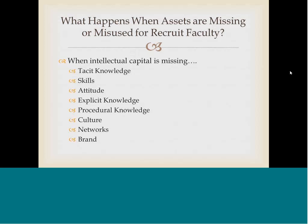It would seem to me — and this is just my personal opinion — that the highest valued asset would be tacit knowledge when we're looking at faculty. So if we were to misuse or mismanage some of the other aspects of the faculty member's intellectual capital, we might lose access to their tacit knowledge. Or the faculty member might become discouraged, be less productive, or be less willing to share their tacit knowledge, resulting in a diminished value associated with that tacit knowledge.